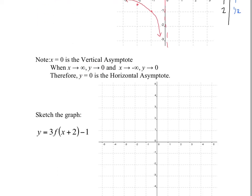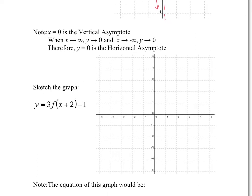Sketch the graph y equals 3·f(x+2) − 1. This is simply the base graph transformed. The 3 multiplies all the y values by 3, so our first points shift up by that factor. Then you move 2 left and down 1. So 2 left and down 1 gives you this point here, and again 2 left and down 1 gives you this point here.